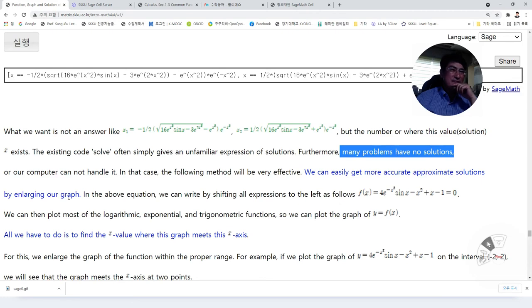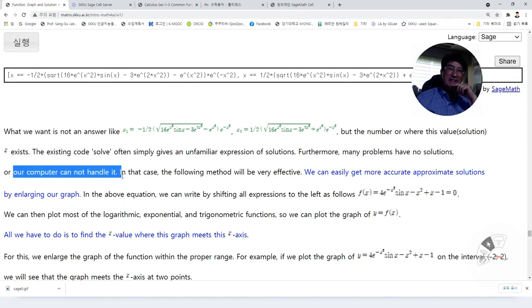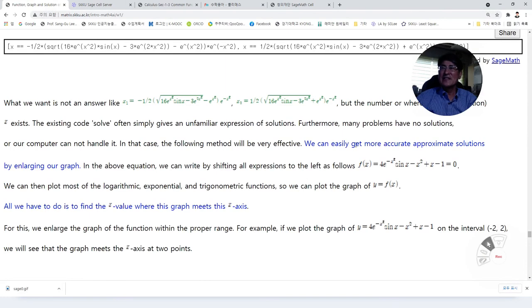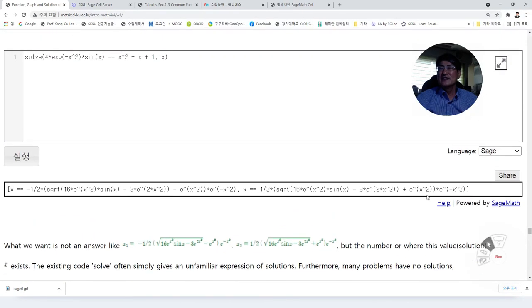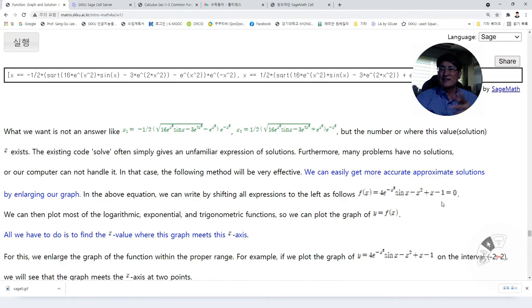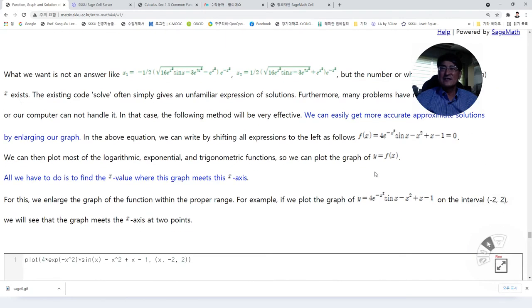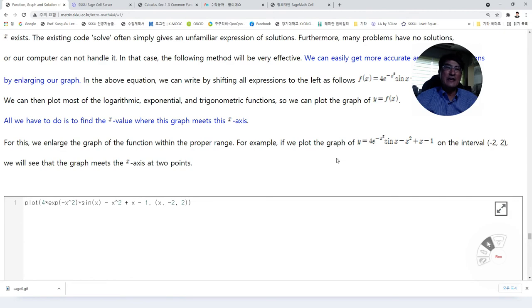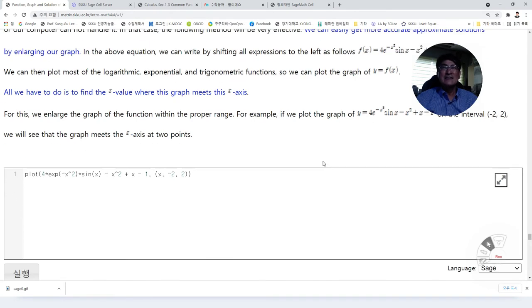Furthermore, many problems have no solutions, or our computer cannot handle it. In that case, the following method will be very effective. We can easily get more accurate approximate solutions by enlarging our graph. If we move the left side to the right, then you will have the function f of x like this. Then we can draw the graph of it. Then we will see where is the solution.